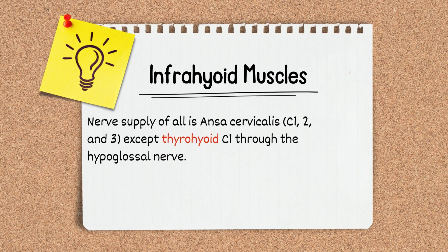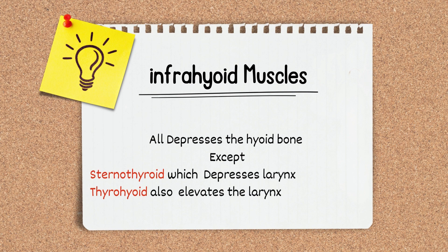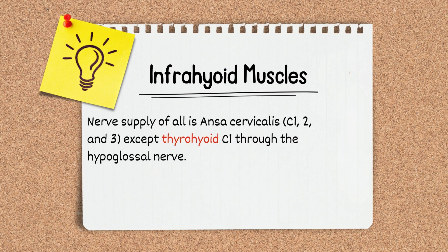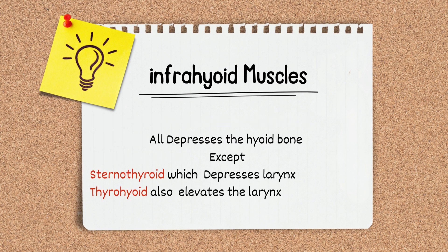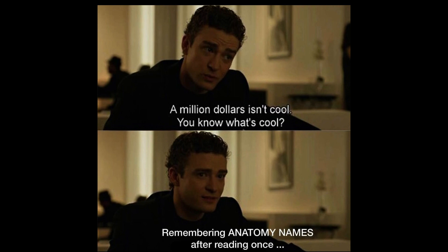The infrahyoid muscles of the neck include sternohyoid, sternothyroid, thyrohyoid, and omohyoid superior and inferior bellies. All infrahyoid muscles are supplied by ansa cervicalis, except the thyrohyoid muscle, which is supplied through C1 via the hypoglossal nerve. The function of the thyrohyoid muscle is to depress the hyoid bone, while the sternothyroid depresses the larynx and the thyrohyoid elevates the larynx. These muscles are important for MCQs, so it is important to memorize the nerve supply and function of each muscle.